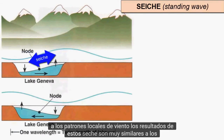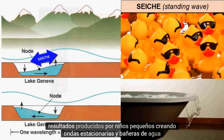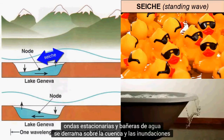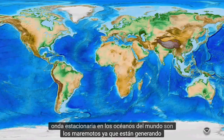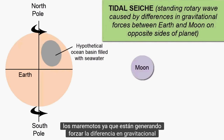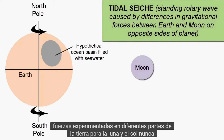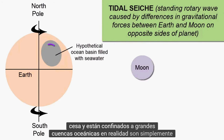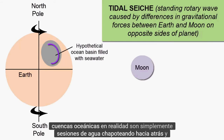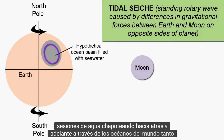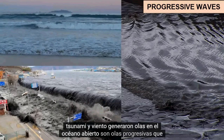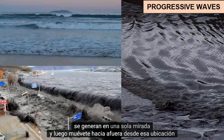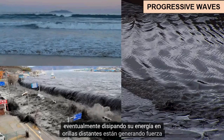The results of these seiches are very similar to the results produced by young kids creating standing waves in bathtubs — water sloshes up and over the basin and floods the surrounding areas. The largest standing waves in the world's oceans are the tidal waves, as their generating force — the difference in gravitational forces experienced on different parts of the earth from the moon and the sun — never ceases, and they are confined to large ocean basins. In reality, they are simply seiches of water sloshing back and forth across the world's oceans. Both tsunami and wind-generated waves in the open ocean are progressive waves, generated in one location and then moving outward, eventually dissipating their energy on distant shores.